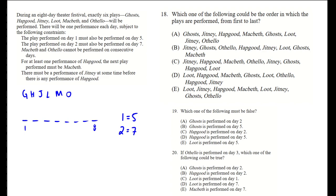Macbeth and Othello cannot be performed on consecutive days, so we cannot have MO and we cannot have OM. For at least one performance of Hapgood, the next play performed must be Macbeth, so we write H→M. And there must be a performance of Jitney before any performance of Hapgood — J before the first H.